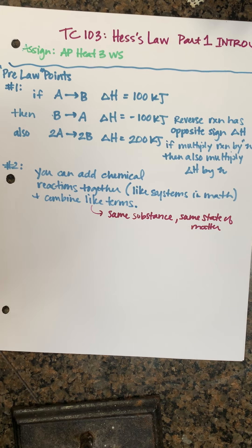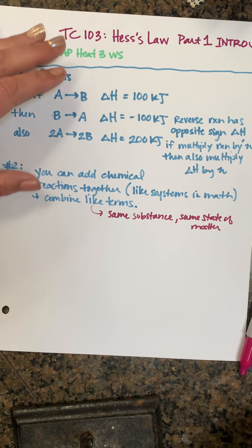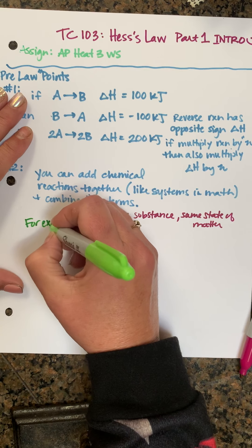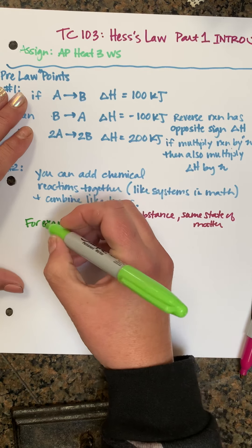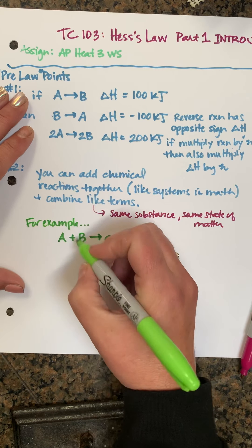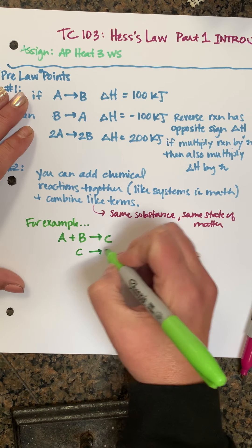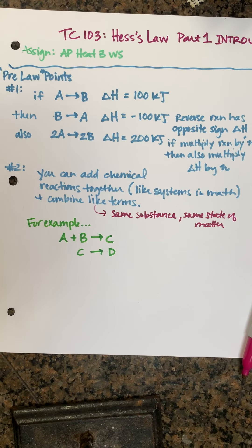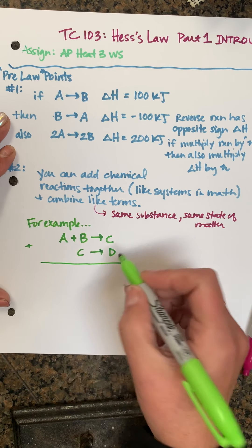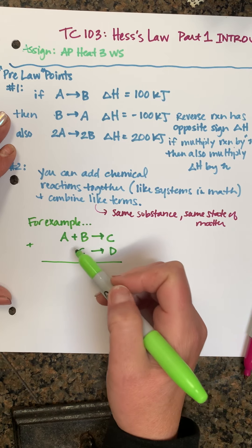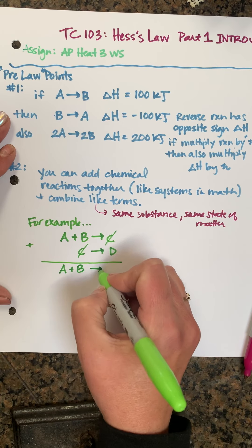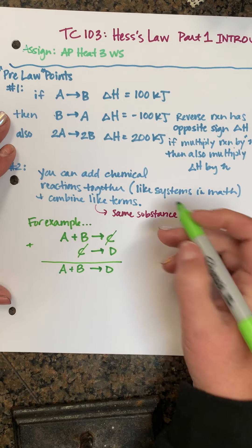So for example, we could say if we had A plus B makes C and we were asked to add that together with C making D. If we were finding the sum of those two equations, because they're across the arrow from each other, these two C's would cancel and we would end up with A plus B makes D.